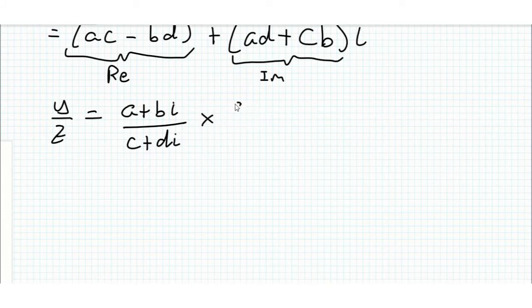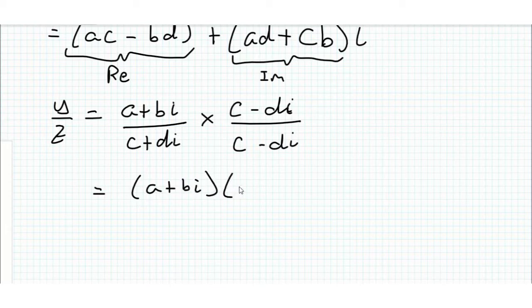so we might multiply by c minus di over c minus di. And on the top we can use what we know about multiplication, but for now I'm just going to write it like this because it doesn't really matter what we get on the top.